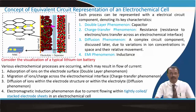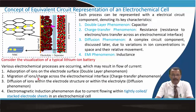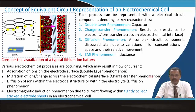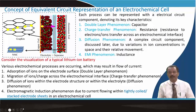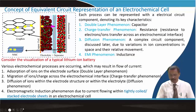Consider the visualization of a typical lithium ion battery: various electrochemical processes are occurring which may result in flow of current, so it is no longer an equilibrium process. Adsorption of ions on the electrode surface is the double layer phenomenon. Migration of ions across the electrochemical interface is the charge transfer phenomenon. Diffusion of ions within the electrode structure or electrolyte is the diffusion phenomenon. Electromagnetic induction is due to current flowing within a tightly coiled stacked electrode in the cell.